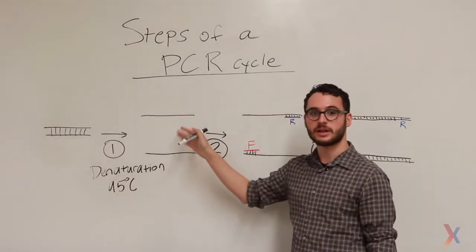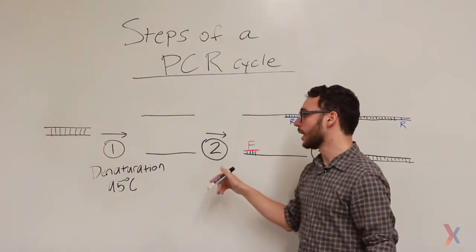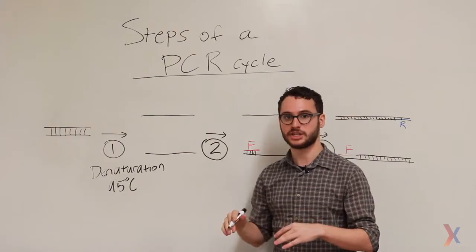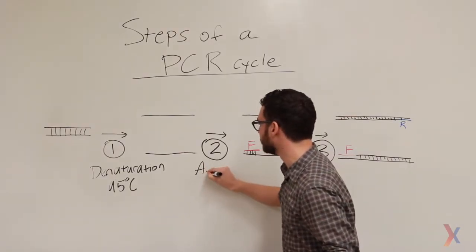Once we have two single strands, we lower the temperature to allow for the primers we designed to bind to the complementary regions within the genome. This step is called annealing.